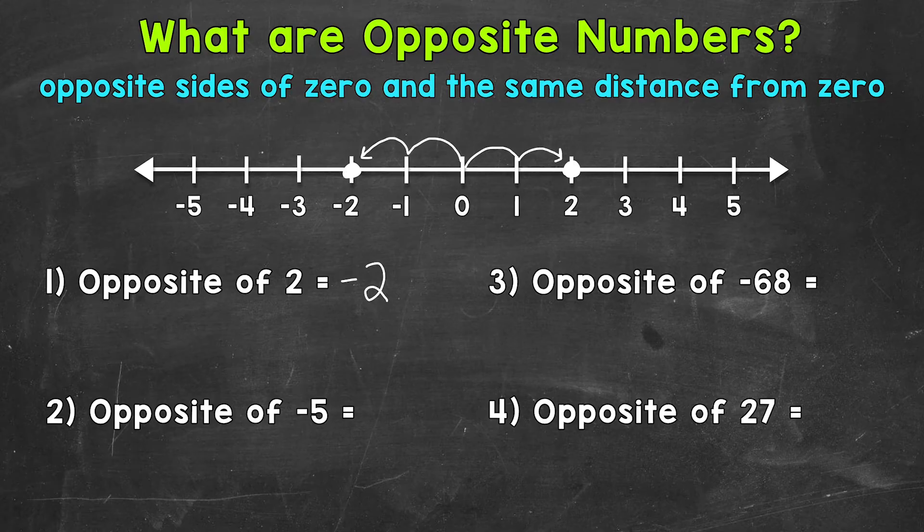And that makes sense. You can see that we just have opposite signs, positive two, which no sign indicates positive, or sometimes you'll see a plus sign to represent positive as well. So the opposite of positive two is negative two.